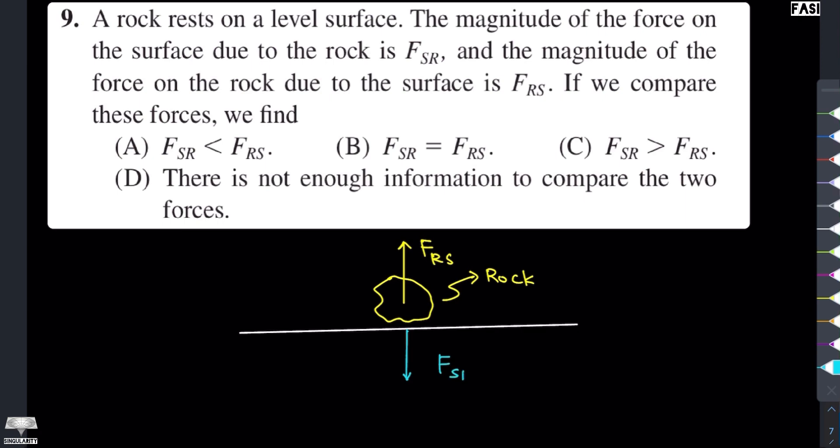اور اب یہ اصلی نیوٹن کا تھارڈلا ہمیں فوراً ہی بتاتا ہے کہ یہ forces جو ہیں یہ magnitude میں برابر ہوتی ہیں اور direction میں opposite ہوتی ہیں تو directions ہم دیکھ سکتے ہیں یہ opposite ہیں دونوں یعنی FRS جو ہے یہ upward direction میں ہے اور FSR جو ہے یہ downward direction میں ہے